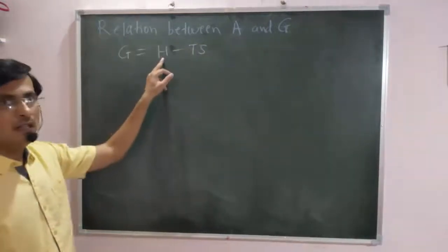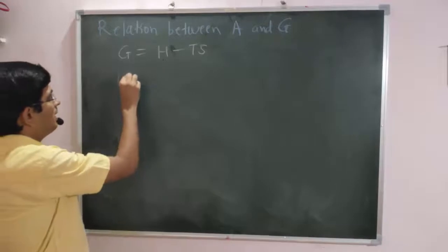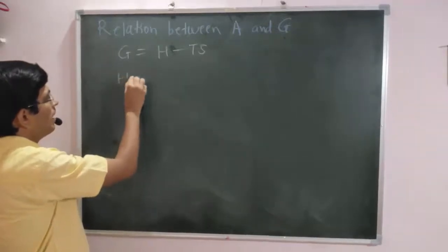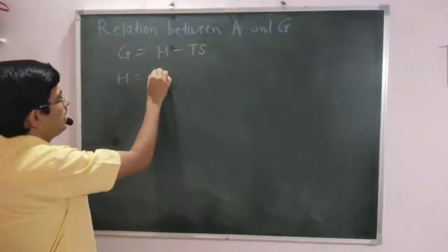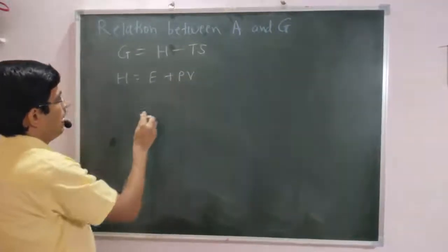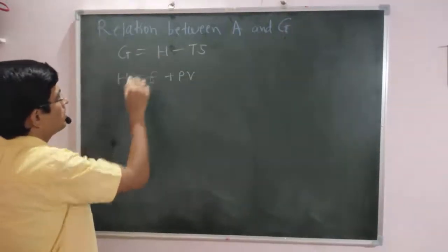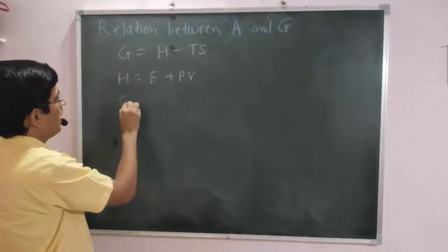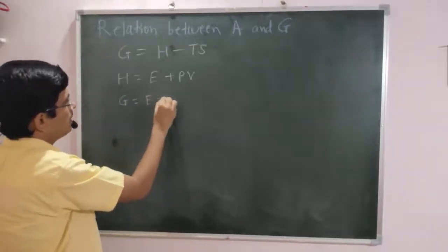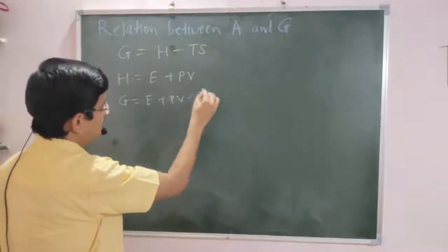Here H is the enthalpy. And from the mathematical definition of enthalpy, we have H is equal to E plus PV. By substituting the value of H in this equation, we write G is equal to E plus PV minus TS.